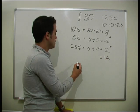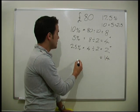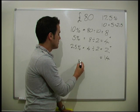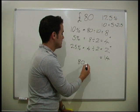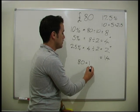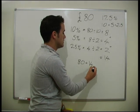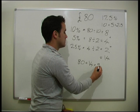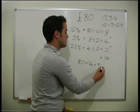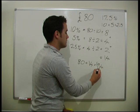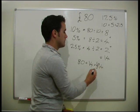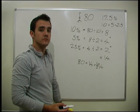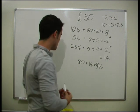So now what we do to find the final price — £80 plus the VAT — we do 80 plus 14, which gives us £94. It's that straightforward.